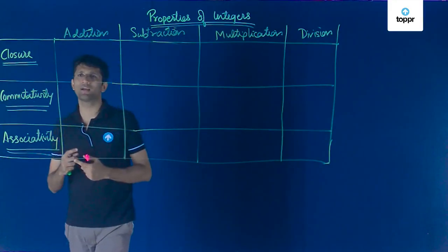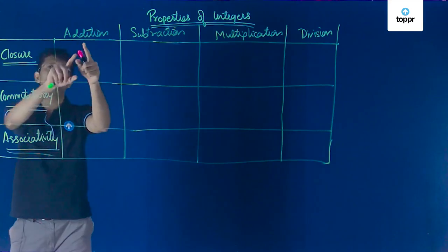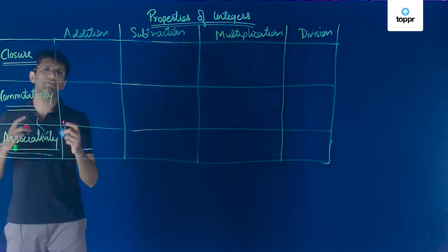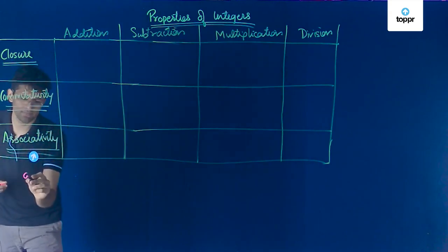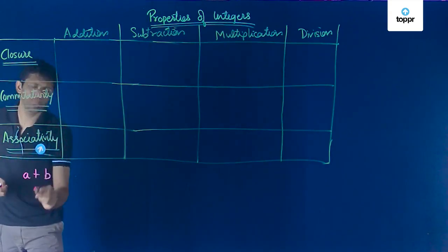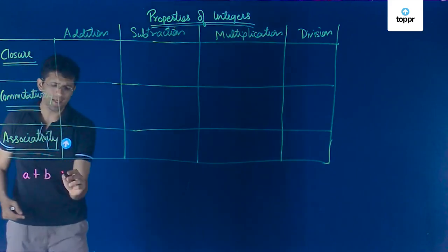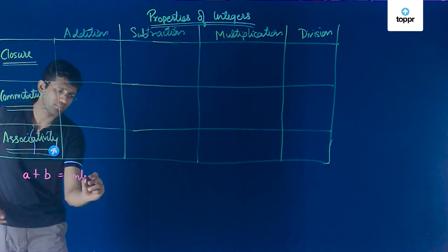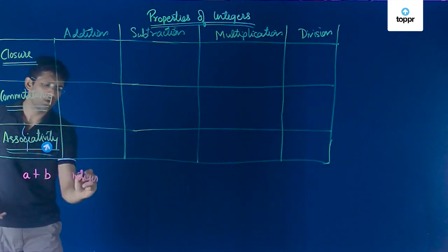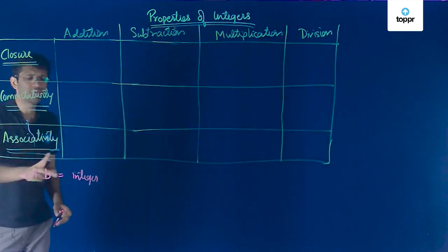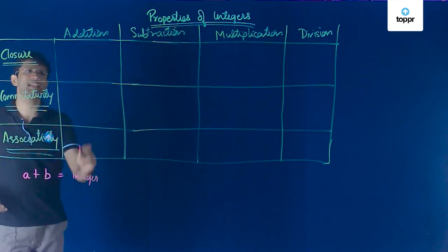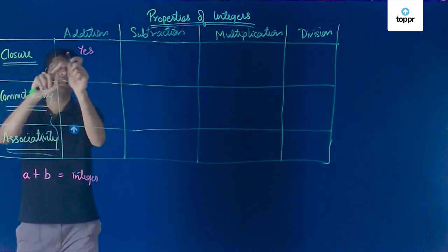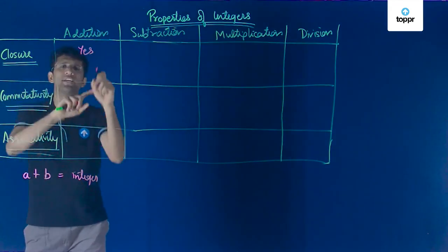The first thing we will discuss is addition, and we will check if the closure property applies to addition of integers. Whenever we have two integers a and b, adding a and b will give us an integer again. So if we are adding two integers the result will also be an integer. Closure property applies for addition on integers.